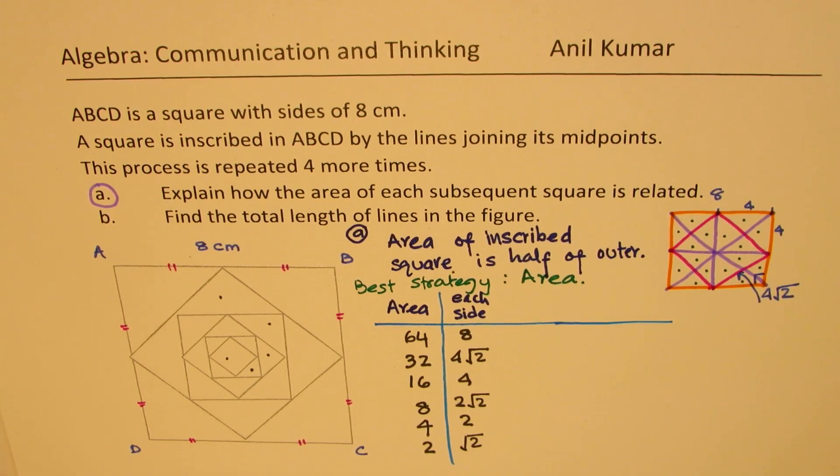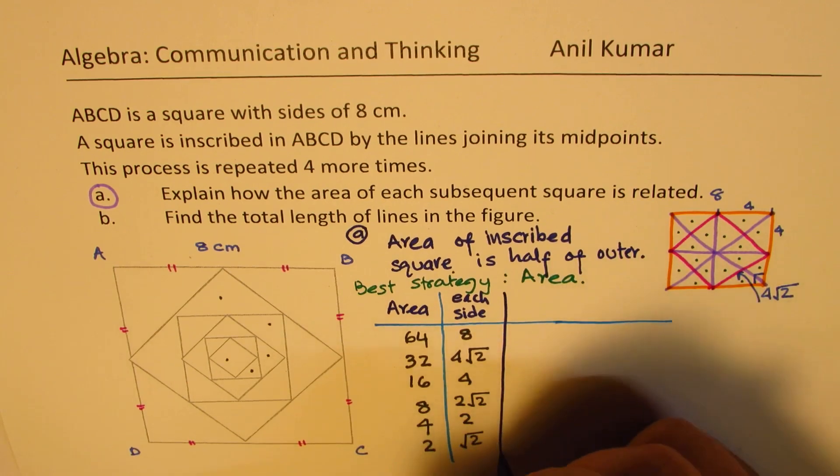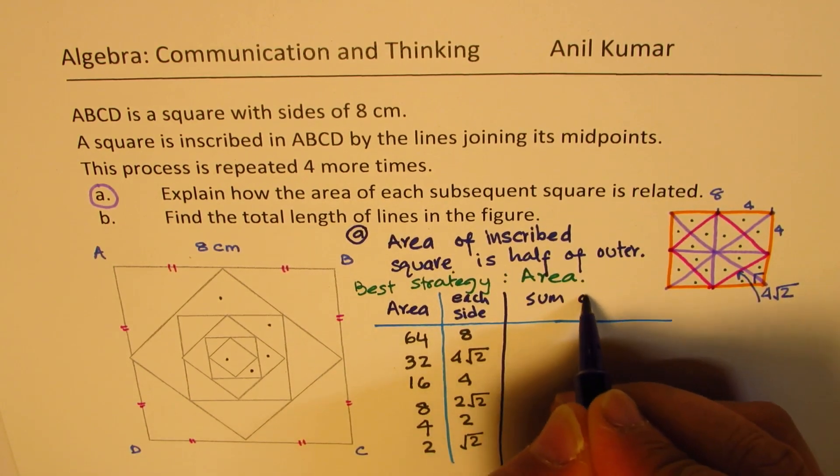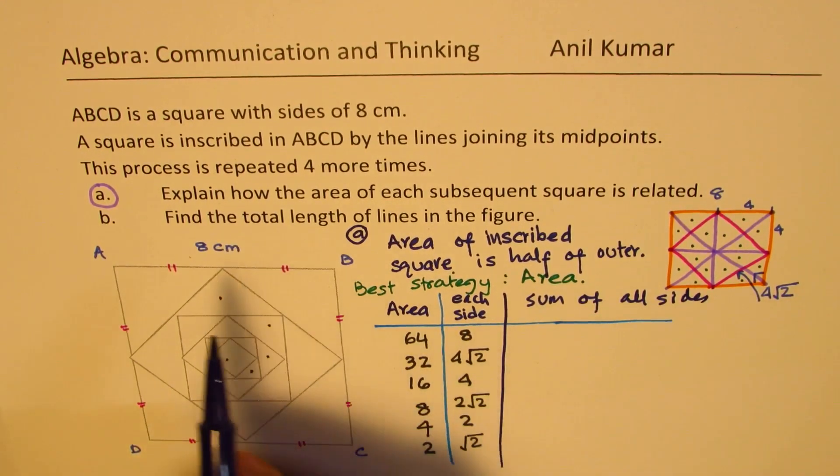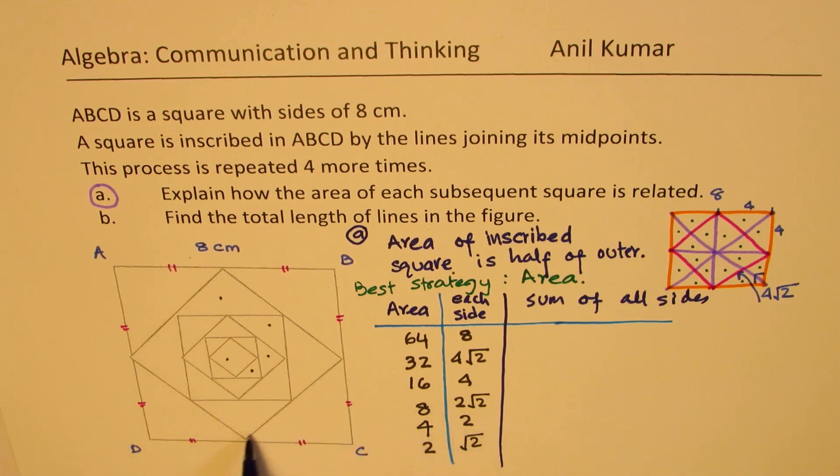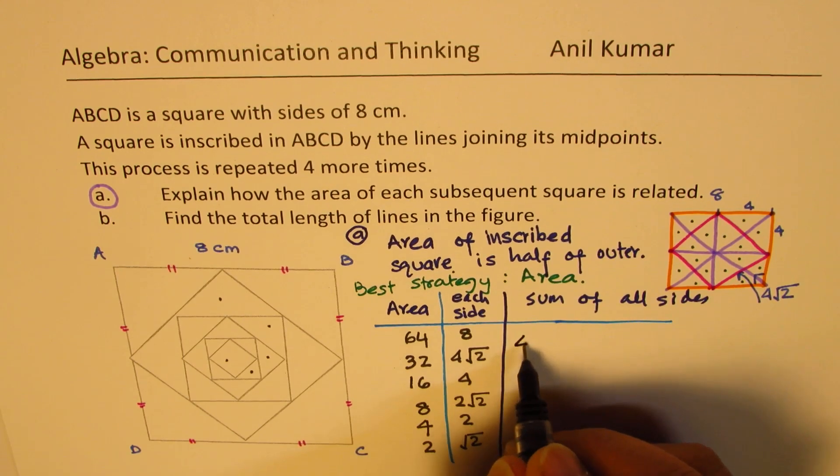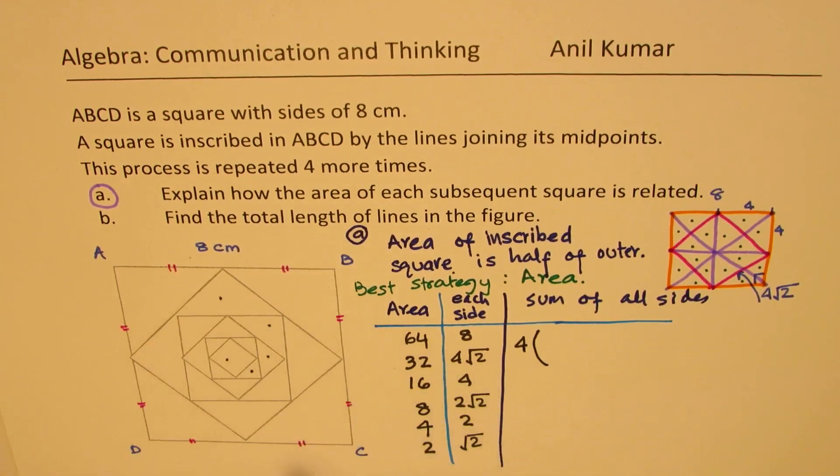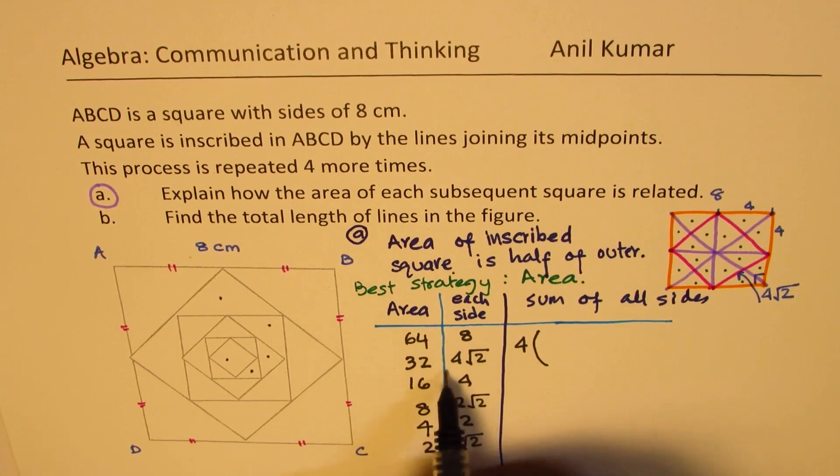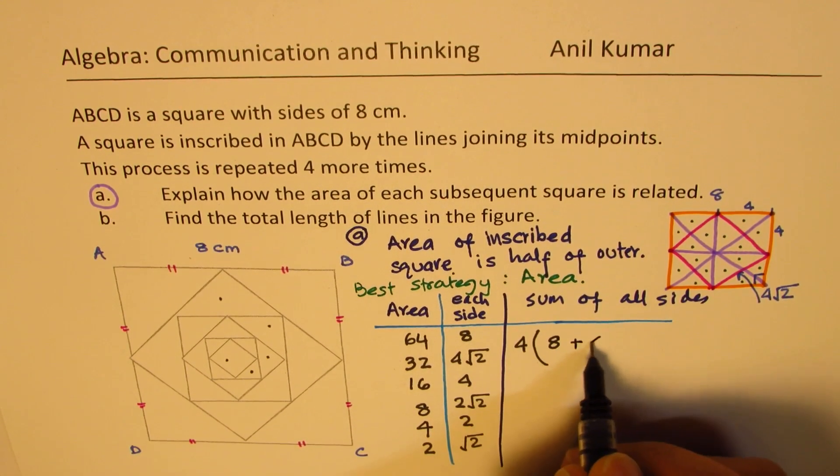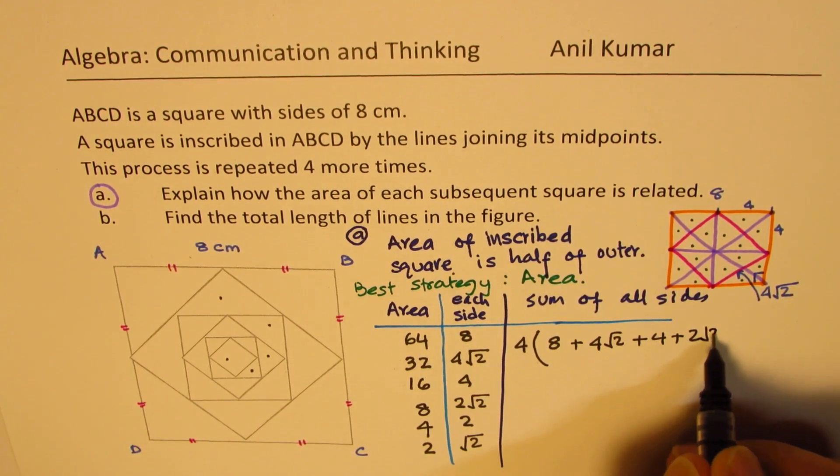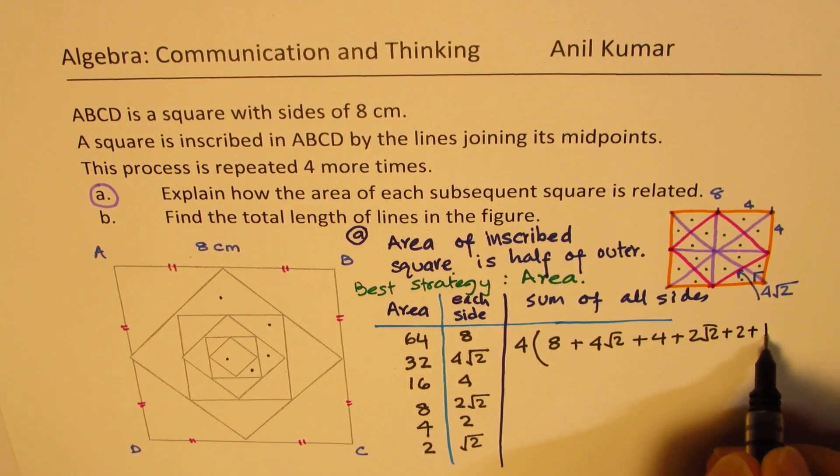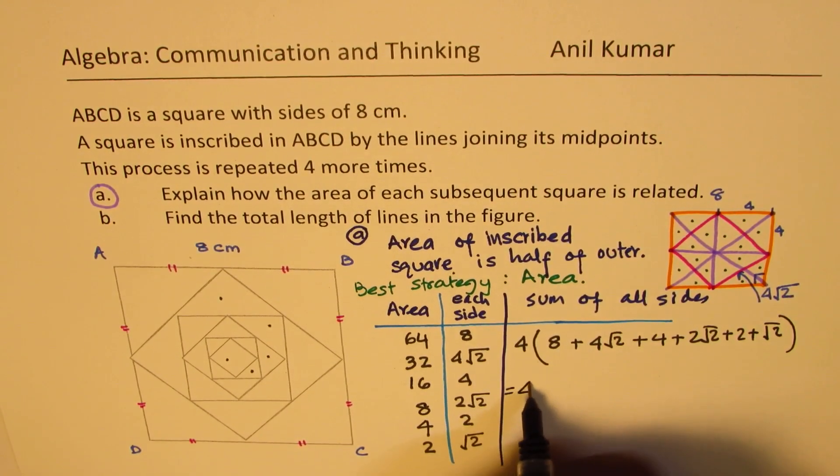Now it is easy to calculate the perimeter. Sum of all sides. That means outer 4 sides, then 4 sides. So 4 of each. That means basically 4 times, since there are 4 sides to a square all of equal length. We will have to add these numbers, which is 8 plus 4 square root 2 plus 4 plus 2 square root 2. So that is equal to 4 times.